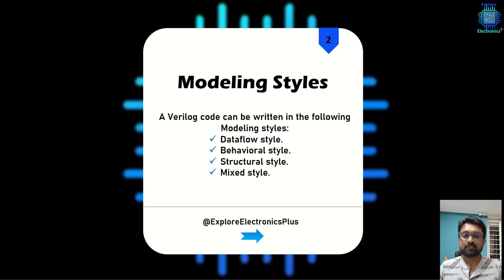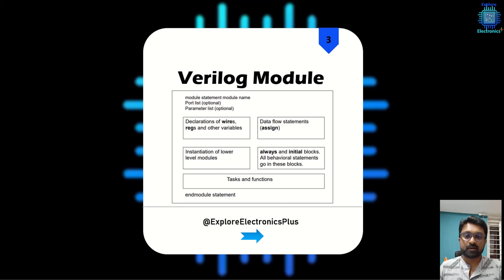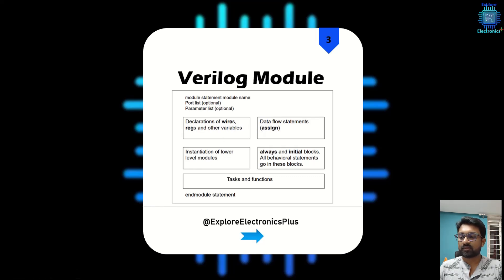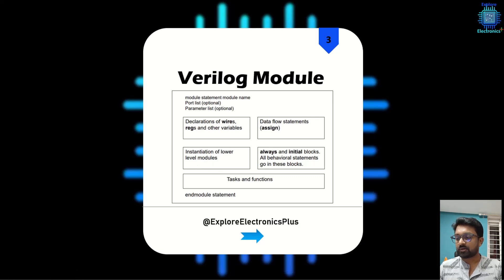So those are the four different styles of Verilog modeling. Any Verilog module starts with the keyword 'module' and ends with 'endmodule'. In between, we declare and use wires, registers, and other variables. It may consist of data flow statements with the 'assign' keyword, lower-level module instantiations, behavioral statements under 'always' or 'initial' blocks, and also tasks and functions, which are very helpful in designing electronic systems.